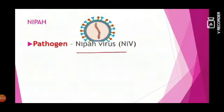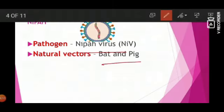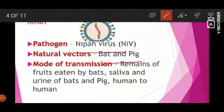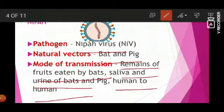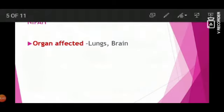Nipah Virus — the pathogen is the Nipah Virus. Vectors are bat and pig. Mode of transmission includes: remains of fruits eaten by bats, saliva and urine of bats, pig-to-human contact, and human-to-human transmission. When saliva and urine contact spreads, the disease spreads.